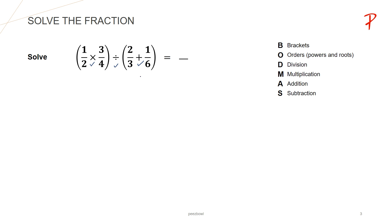So whenever we have this kind of example, we have to follow this particular rule that is BODMAS. The order of operation goes like this: first we need to solve the bracket, after that orders — that is power and roots — then division, after that multiplication, then addition and subtraction.